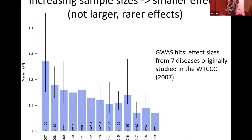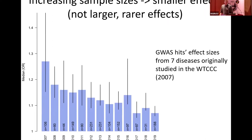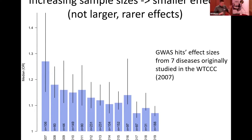First, a bit of background on why this is important. Genetic risk for common diseases is distributed across hundreds of loci, all of which are common variants with overwhelmingly very small effect sizes. As statistical power increases, one of two things could happen: you could find more common variants with smaller and smaller effect sizes reaching genome-wide significance, or you could find variants with larger effect sizes at lower significance. In practice, overwhelmingly the former happens.